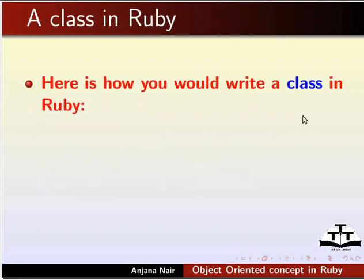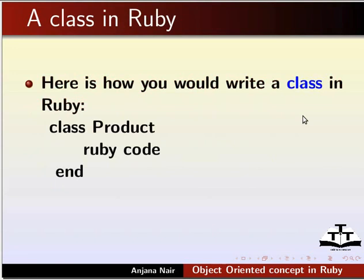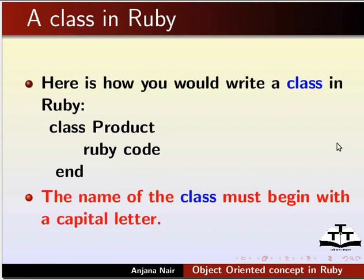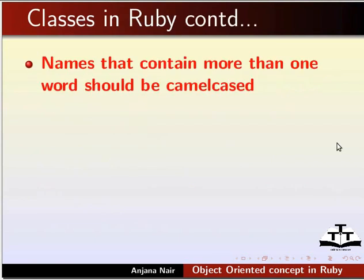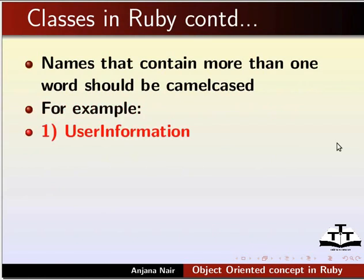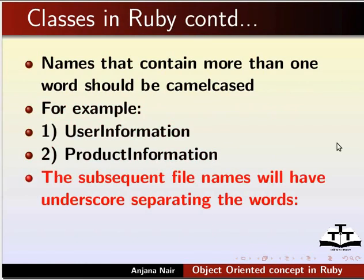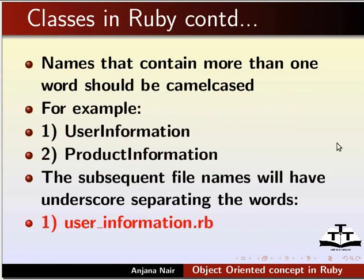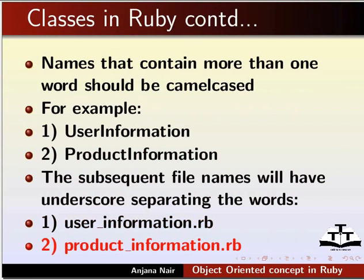Let us look at an example of a class. The name of the class must begin with a capital letter. Names that contain more than one word should be camel-cased — for example, UserInformation or ProductInformation. The corresponding file names will have an underscore separating the words: user_information, product_information.